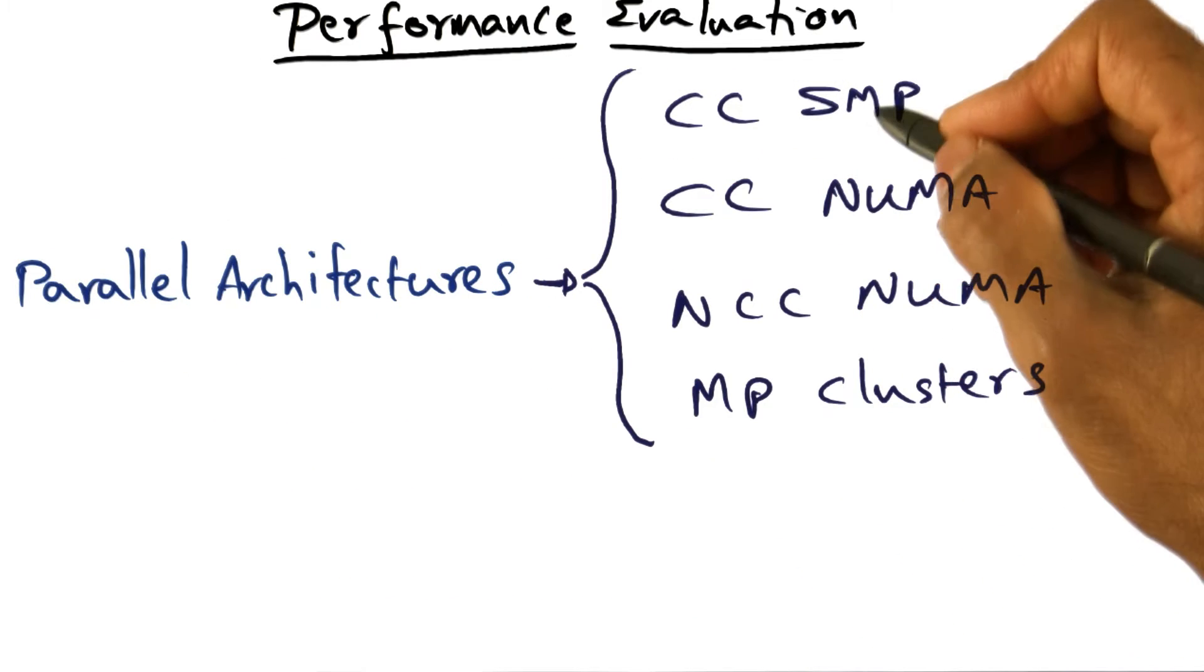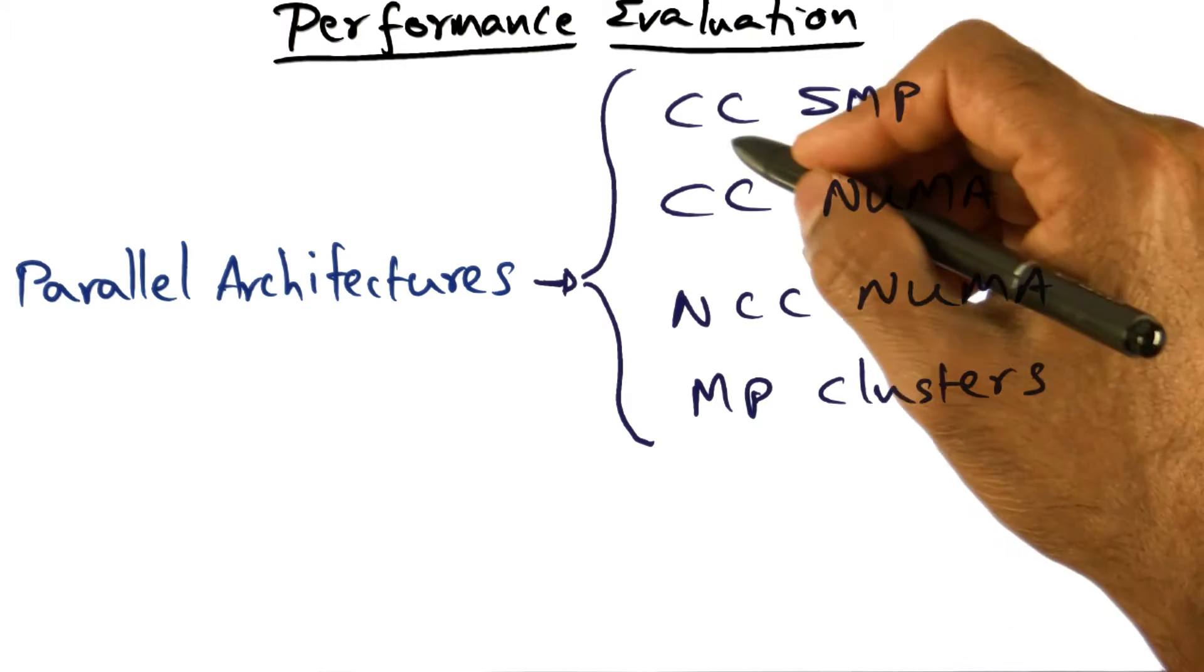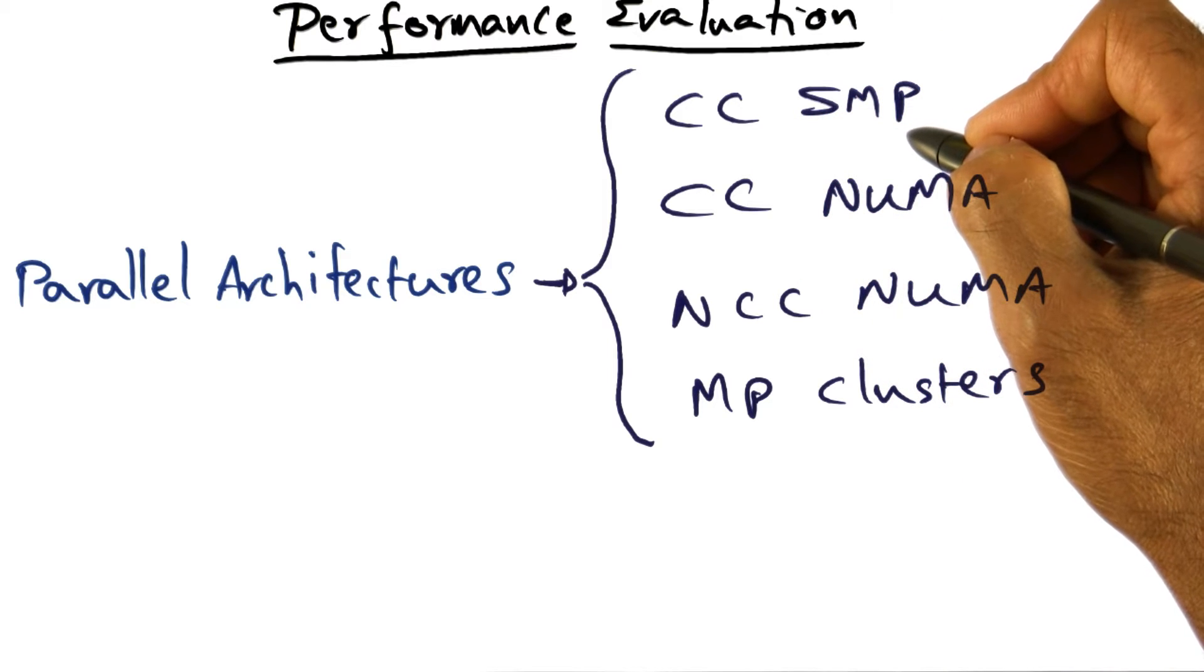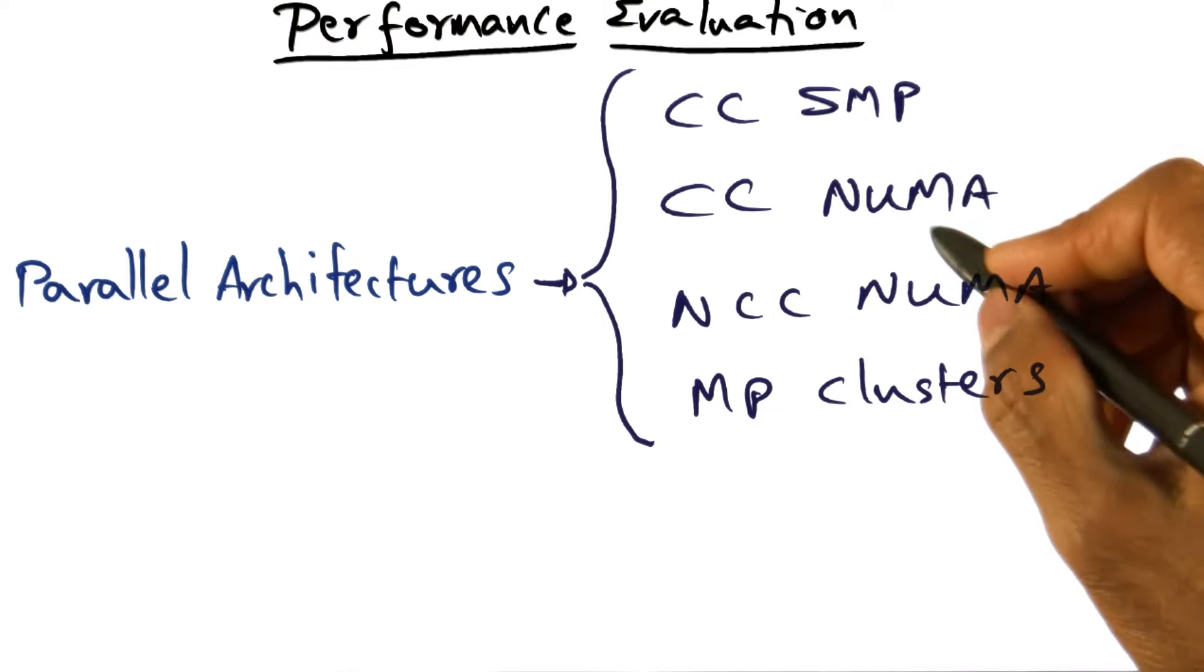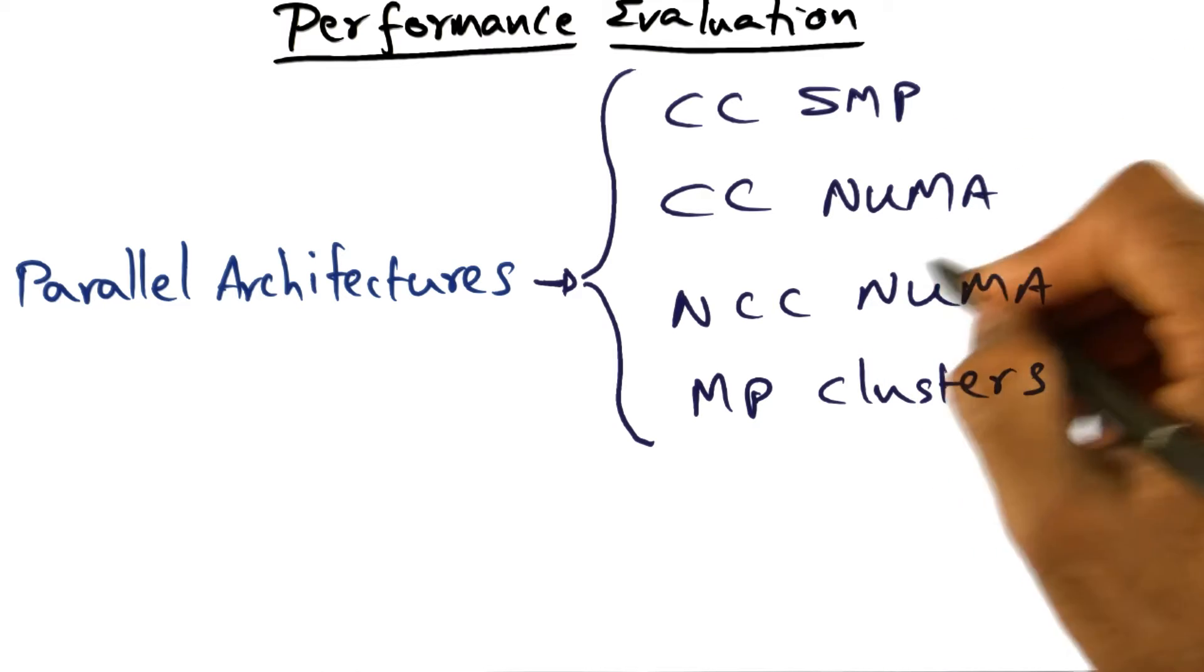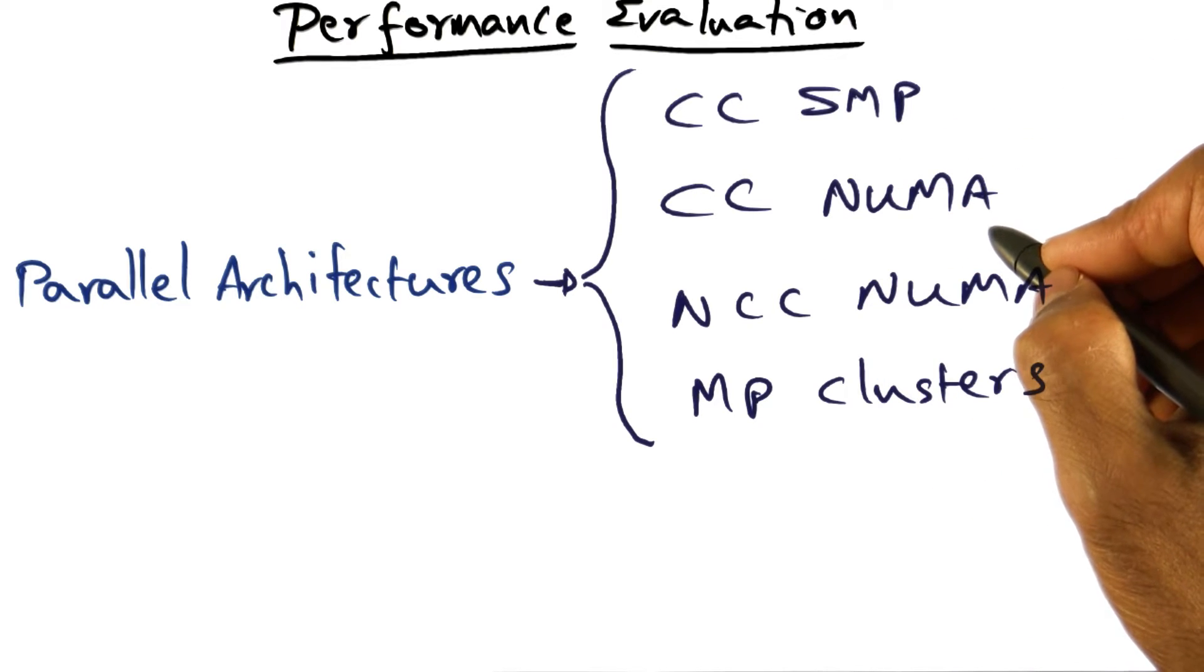I've also introduced you to several different kinds of parallel architectures. A shared memory multiprocessor that is cache coherent, which may be a symmetric multiprocessor, or it could be a non-uniform memory access multiprocessor.